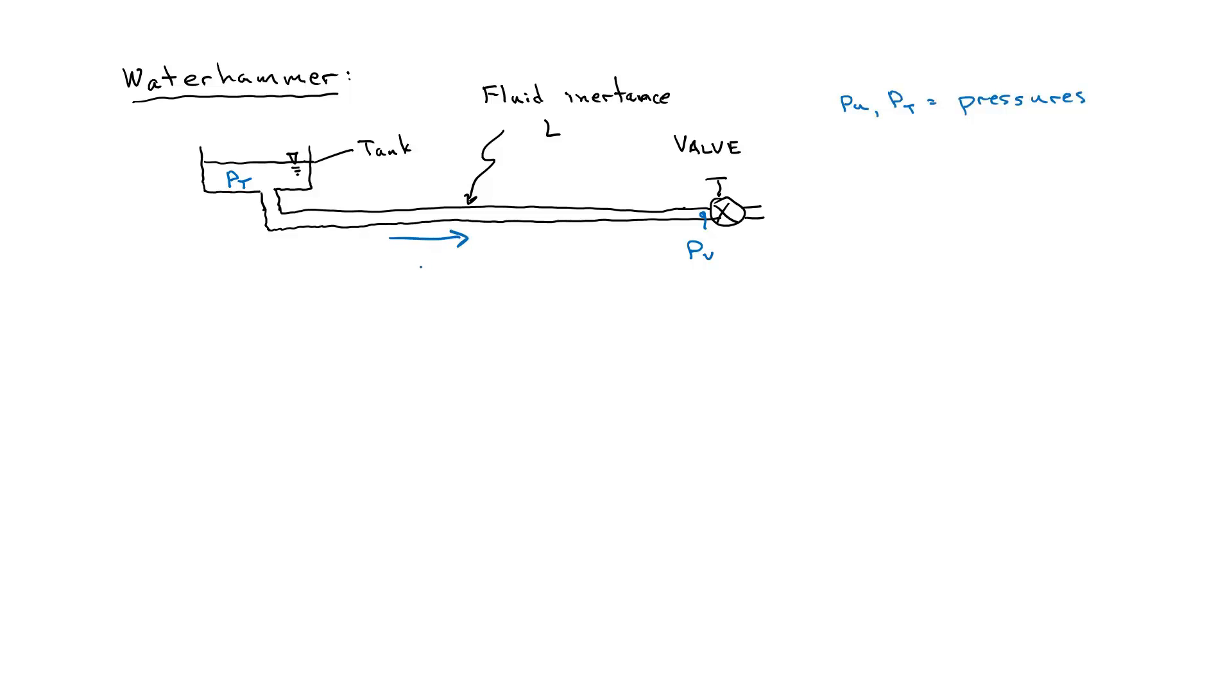The fluid has some flow rate. W dot is the mass flow rate. If I write a mathematical model of this system which considers the fluid in this line to be all one lump with the same velocity or the same flow rate everywhere, I get what's called a lumped parameters model. That model says that the pressure difference P T minus P V is equal to the inertance times the derivative of flow rate with respect to time.